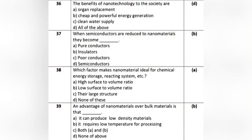Question 13: When semiconductors are reduced to nanomaterials, they become — Option A: pure conductors. Option B: insulators. Option C: poor conductors. Option D: semiconductors. The correct answer is Option B: insulators.